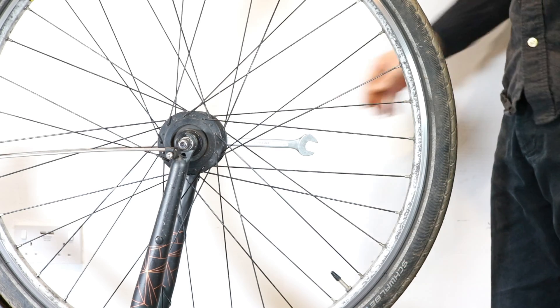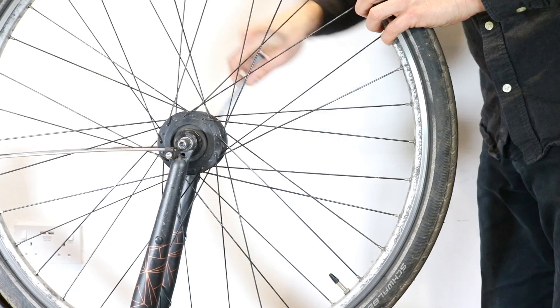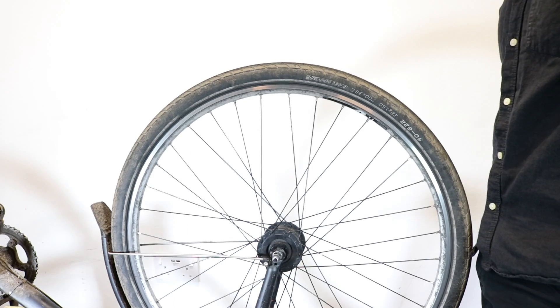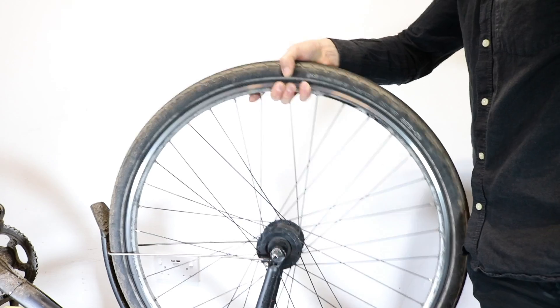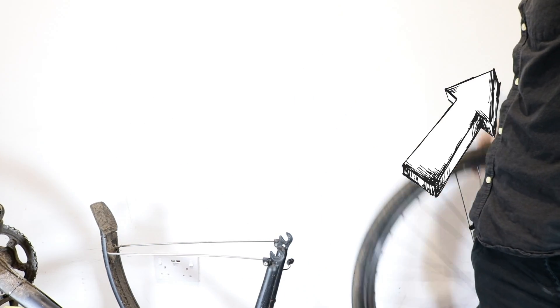Preparation. Before you start working on your dynamo hub, make sure to take off the wheel, and if required, a disc rotor or roller brake. If you're unsure about how to do this, you can check out my video tutorials here. You can also find links to these videos in the description below.